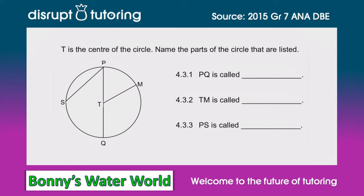We start off by reading the question: T is the center of the circle. Now why is it always important to know that T is the center? Importantly, if no one tells you that T is the center of the circle, even though it looks like the center, you cannot assume it is the center. So it's always very important that you read the question — if they do not mention it, you cannot assume it.